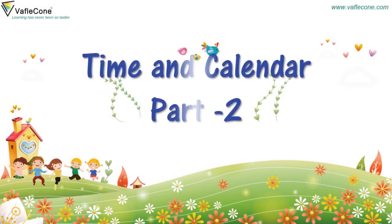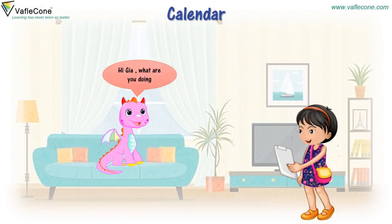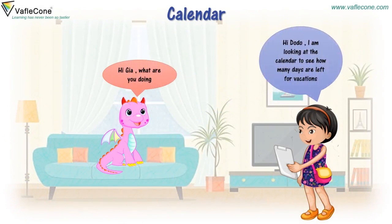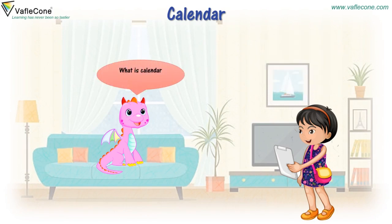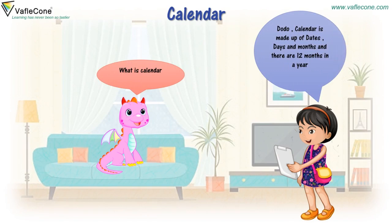Time and Calendar Part 2. Hi Chia, what are you doing? Hi Dodo, I am looking at the calendar to see how many days are left for vacations. What is a calendar? Dodo, a calendar is made up of dates, days, and months, and there are 12 months in a year.